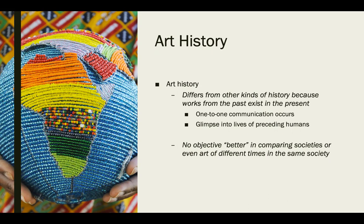Art history differs from other types of history because we still see the works from the past evident in the present. We have the artifacts directly there that were made and created during the time they existed. A more one-to-one communication can occur through art history because we don't need language to understand the artwork necessarily — we can look at the images to understand what was trying to be communicated.